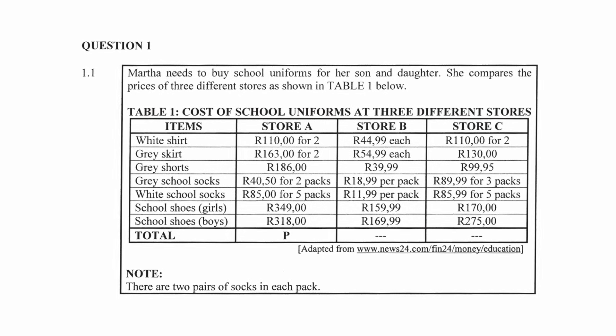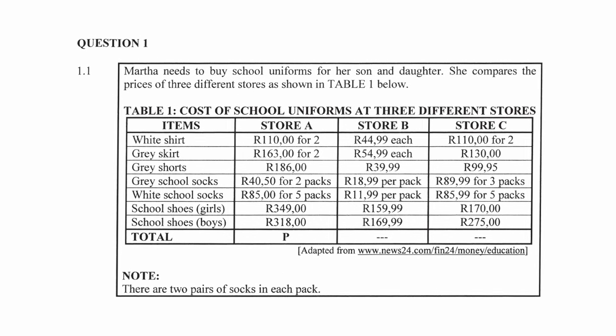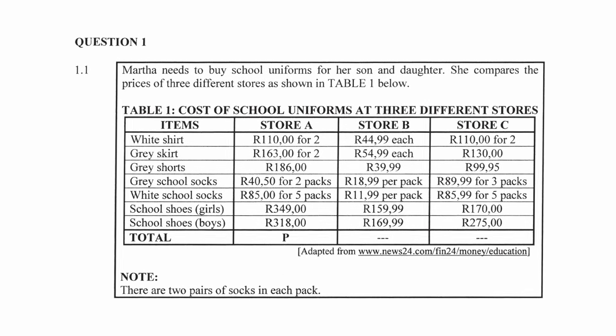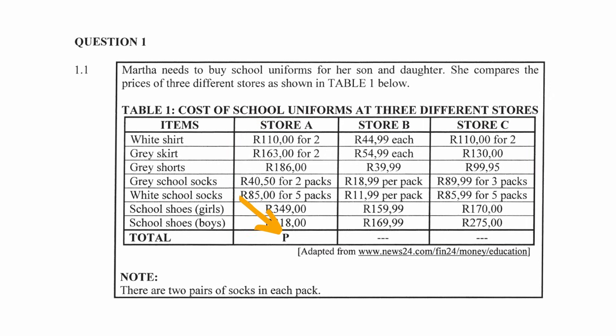You are given a table that shows the cost of school uniforms at three different stores. In the first column, you are given the type of clothing items to be purchased. The second, third, and fourth columns list the prices of each item for Store A, B, and C. You are also given an unknown value P that will have to be calculated. Note that there are two pairs of socks in each pack.